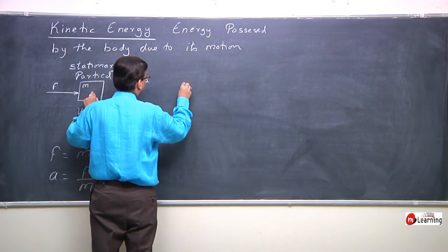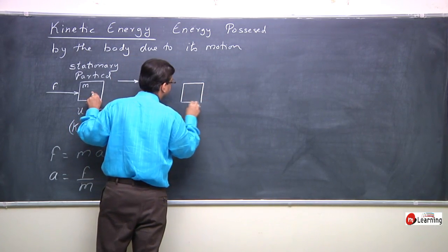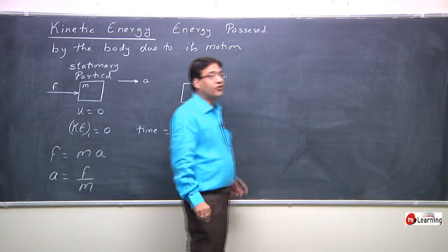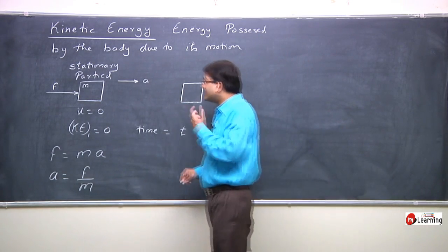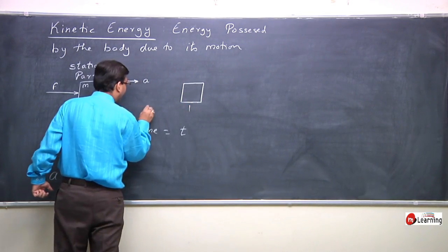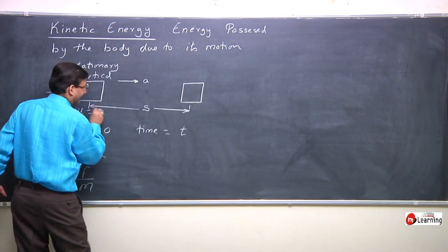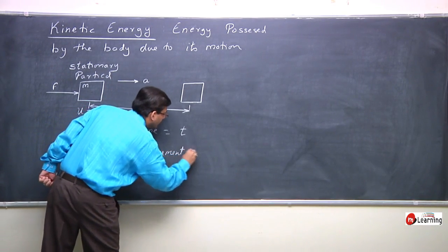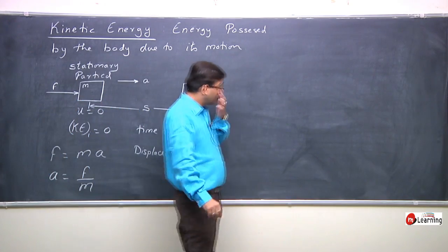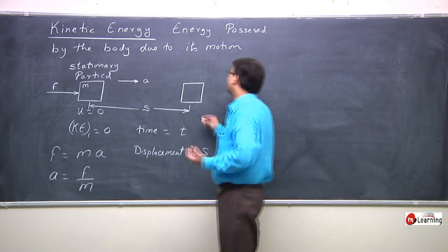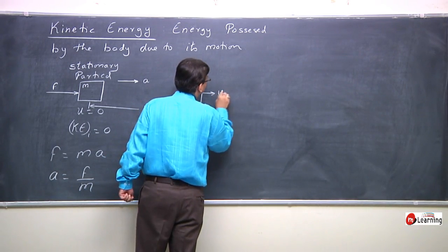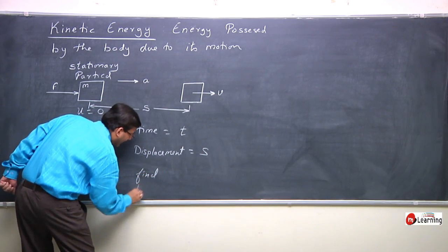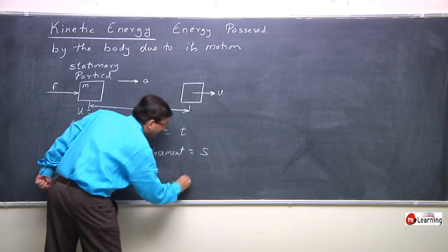This body, due to this force, achieves velocity V after time T. This force acts for time T, and during this time T the body got displaced by S. Its displacement is S, and after getting displaced, after time T, the body acquires some final velocity V.